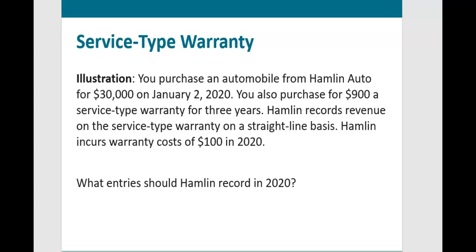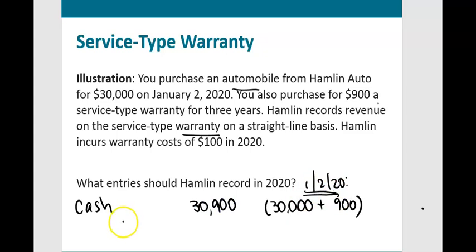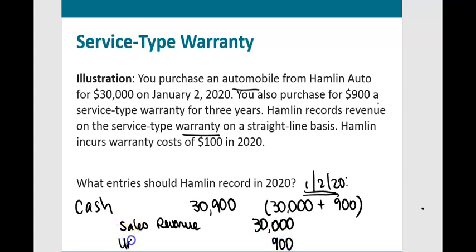What entries should the company record in 2020? On January 2nd, the company receives cash of $30,900 ($30,000 for the car plus $900 for the three-year warranty). Revenue recorded on January 2nd is only what's been earned — $30,000 for the car — because that's delivered to the customer. The remaining $900 relating to the warranty is recorded into unearned warranty revenue, a liability account.